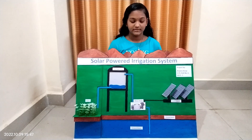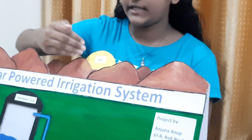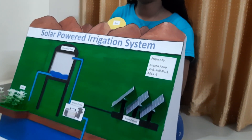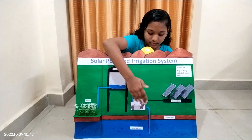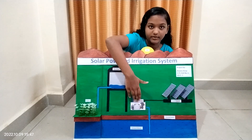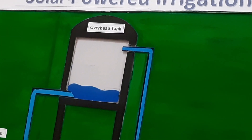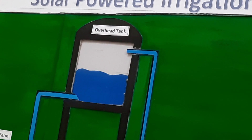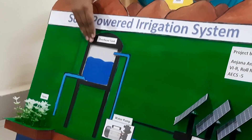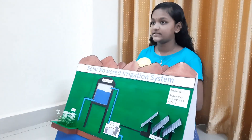Let's see the process. When the sun rises, its rays fall on the solar panel, then it converts it into electrical energy which is utilized by the water pump to pump out the groundwater and store it in the overhead tank. As you can see, the water level in the overhead tank is rising up. Now this stored water can be used to water the plants as per our convenience. Thank you.